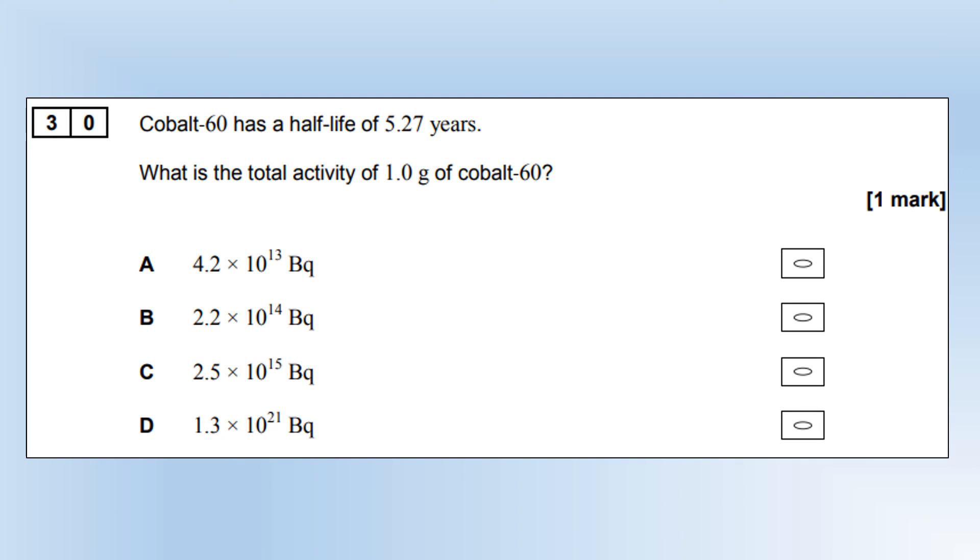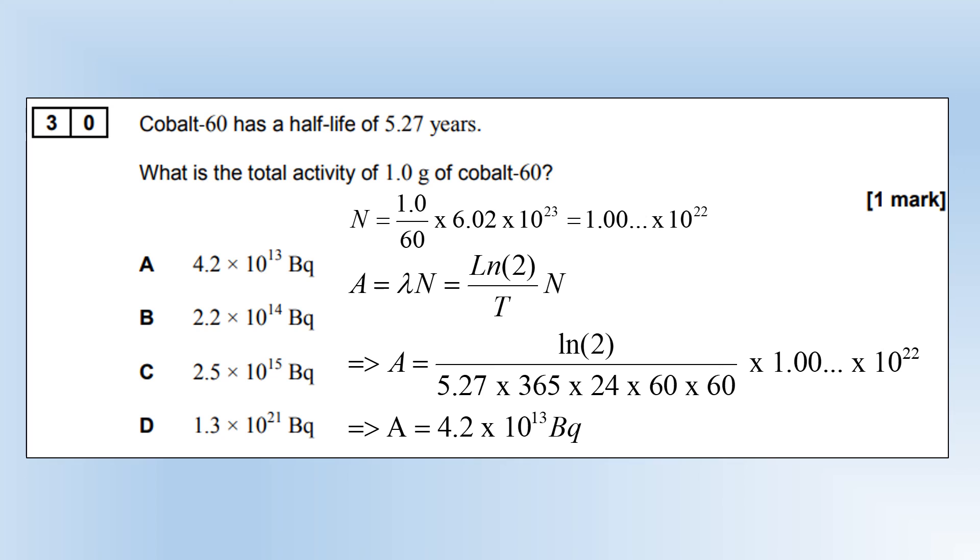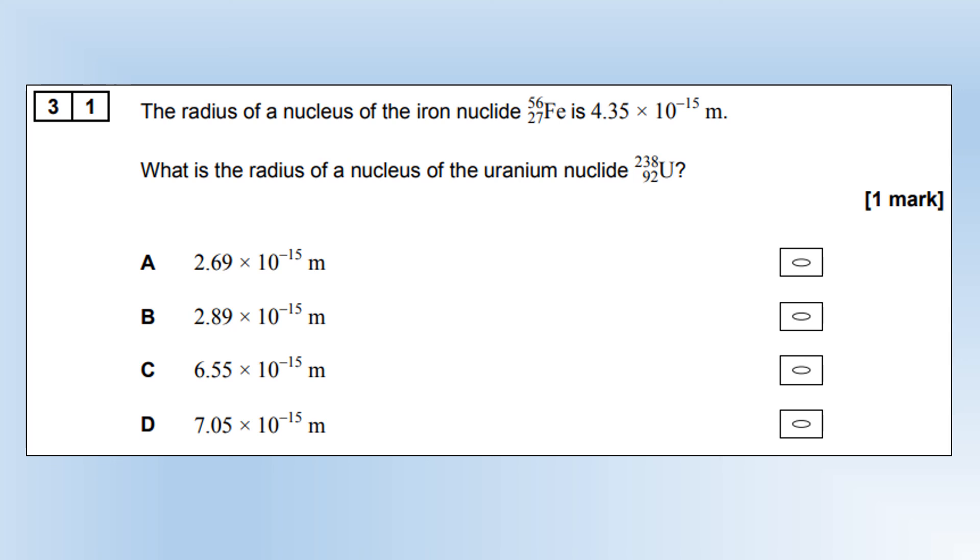Cobalt-60 has a half-life of 5.27 years. What is the total activity of 1 gram of cobalt-60? First, I'm going to calculate how many molecules of cobalt-60 I've got. Then, we can convert activity from that. We need to figure out what the decay constant is. It's LN2 over the half-life. We need the half-life in seconds because we want the activity in Becquerel, giving us option A once we plug the numbers in. The radius of a nucleus of the iron nuclide 56 Fe is 4.35 times 10 to minus 15, or 4.35 femtometers. What is the radius of the nucleus of uranium nuclide 238? You should know the radius is proportional to the nucleon number to the power of a third, or the cube root of nucleon number. I'm going to multiply the radius of iron by 238 over 56, all cube rooted, giving us the answer D.